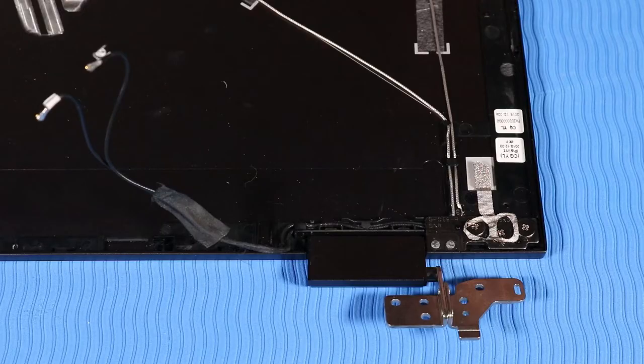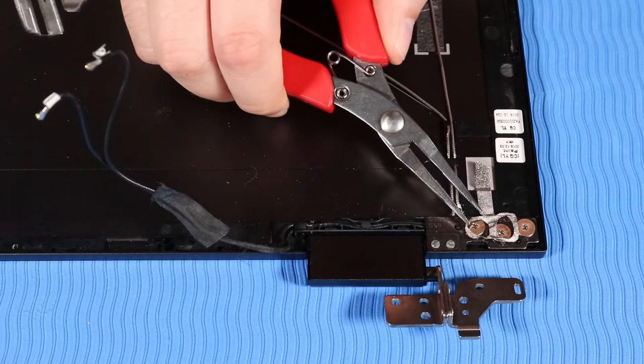Removal. Make careful note of the routing of all the cables for later replacement. Detach the mylar tape that covers the right hinge.